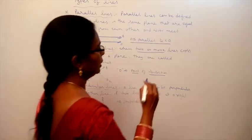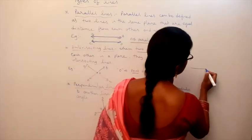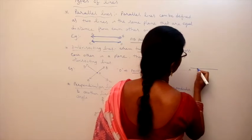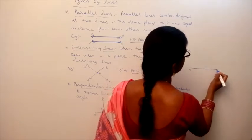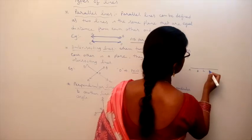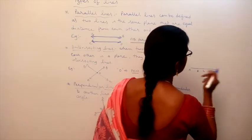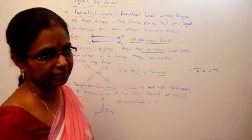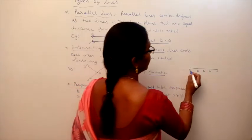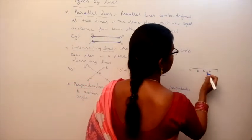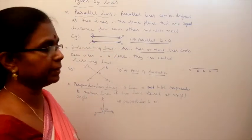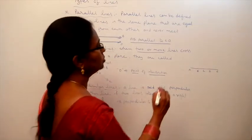Now, one example. There is one line segment with five points on it: A, B, C, D, E. How many line segments can we form from these five points?